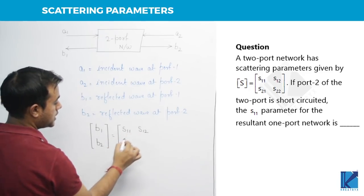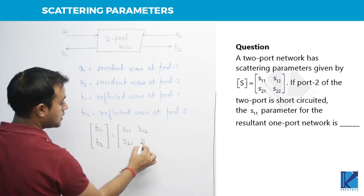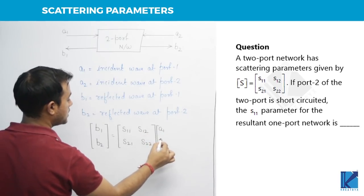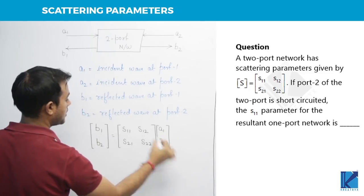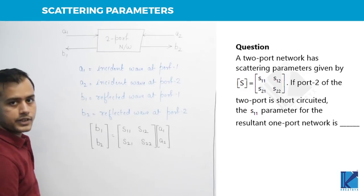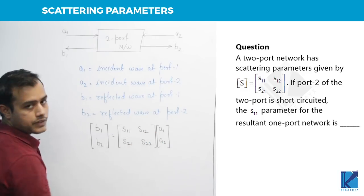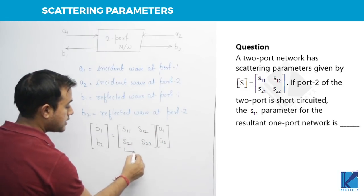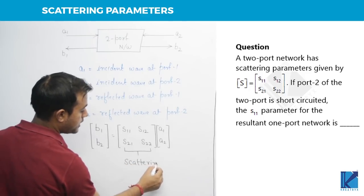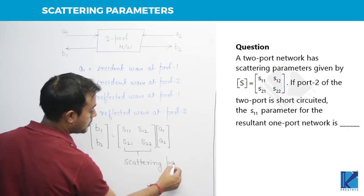S11, S12, S21, S22, then A1, A2. That is, the relation between the reflected waves and the incident waves, we call it as scattering parameters. These parameters are called as scattering parameters or S parameters.